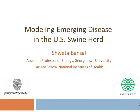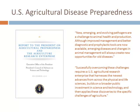No one in the room needs to be convinced of the importance of emerging diseases of agricultural relevance. This is some quotes from a report out of the White House Office of Science Technology and Policy, which identified pests and pathogens as one of the most pressing challenges for agricultural preparedness, highlighting the need for advances in both physical and life sciences. Mathematical modeling sits at the interface of those sciences and helps us answer questions about emerging diseases from a preparedness, surveillance, and control perspective.